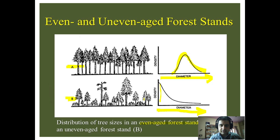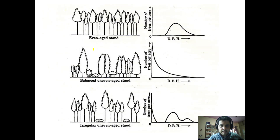This is again illustrated in the next figure. For an even-aged stand, the relation between diameter and number of trees per hectare follows the bell-shaped curve. For a balanced uneven-aged stand, it forms a declining curve. For an irregular uneven-aged stand, the curve has multiple humps.